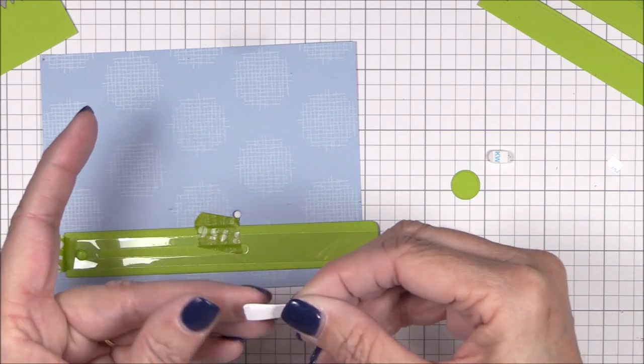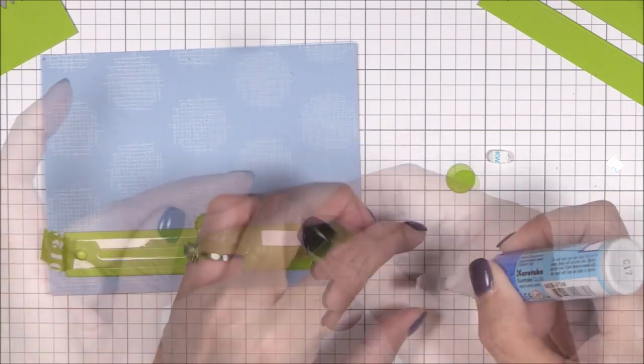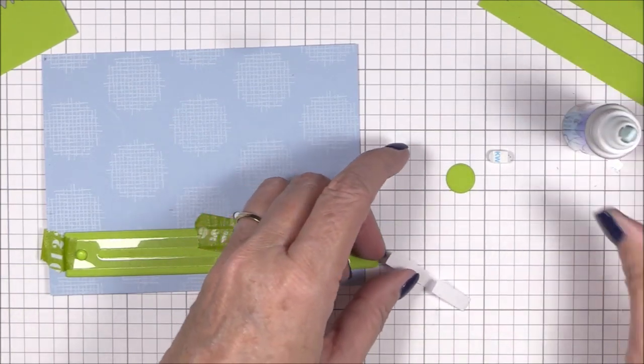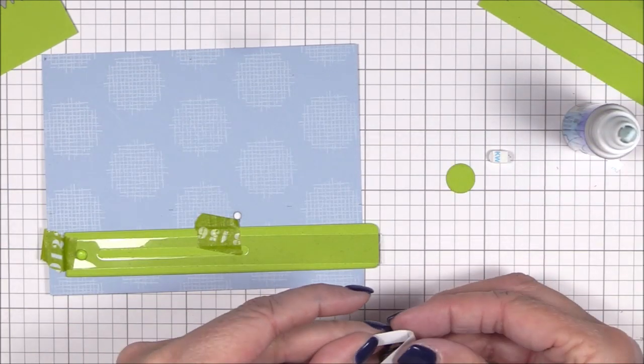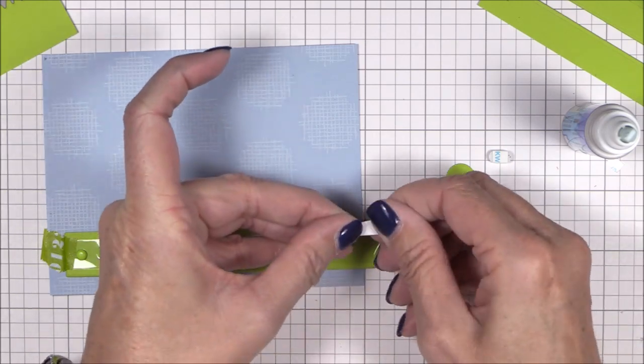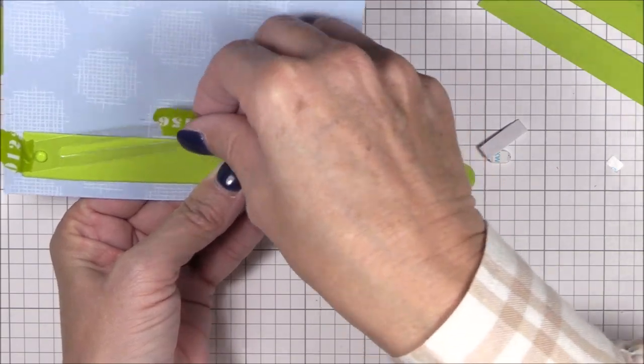Next, I'm folding the pull tab collar on the provided score lines and I'll adhere the ends together with a glue pen. This pull tab collar will help keep the pull tab aligned without the bulk of foam tape. It's honestly the best way I've found to keep most interactive mechanisms stabilized.